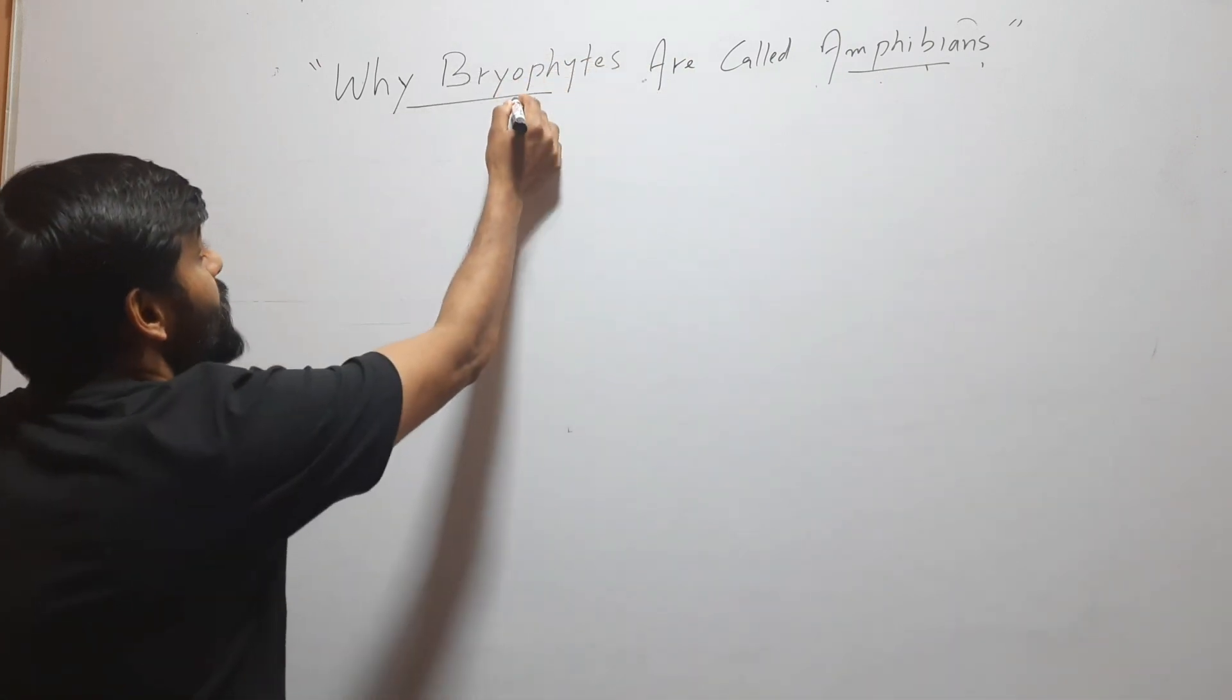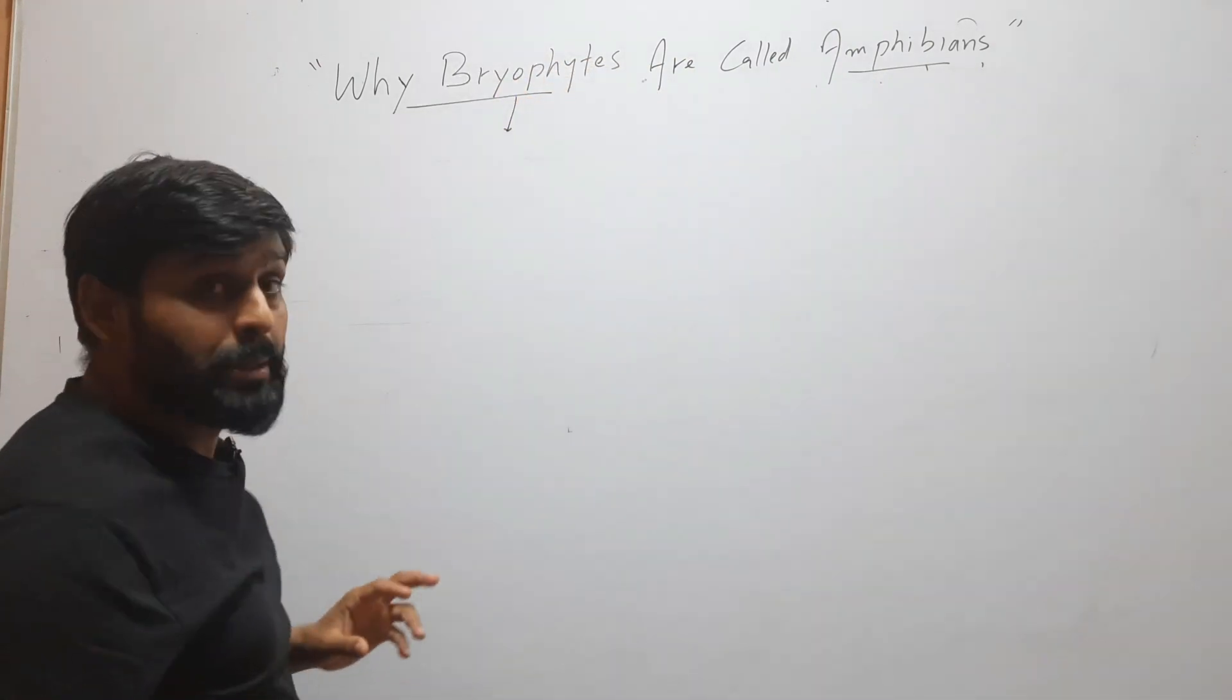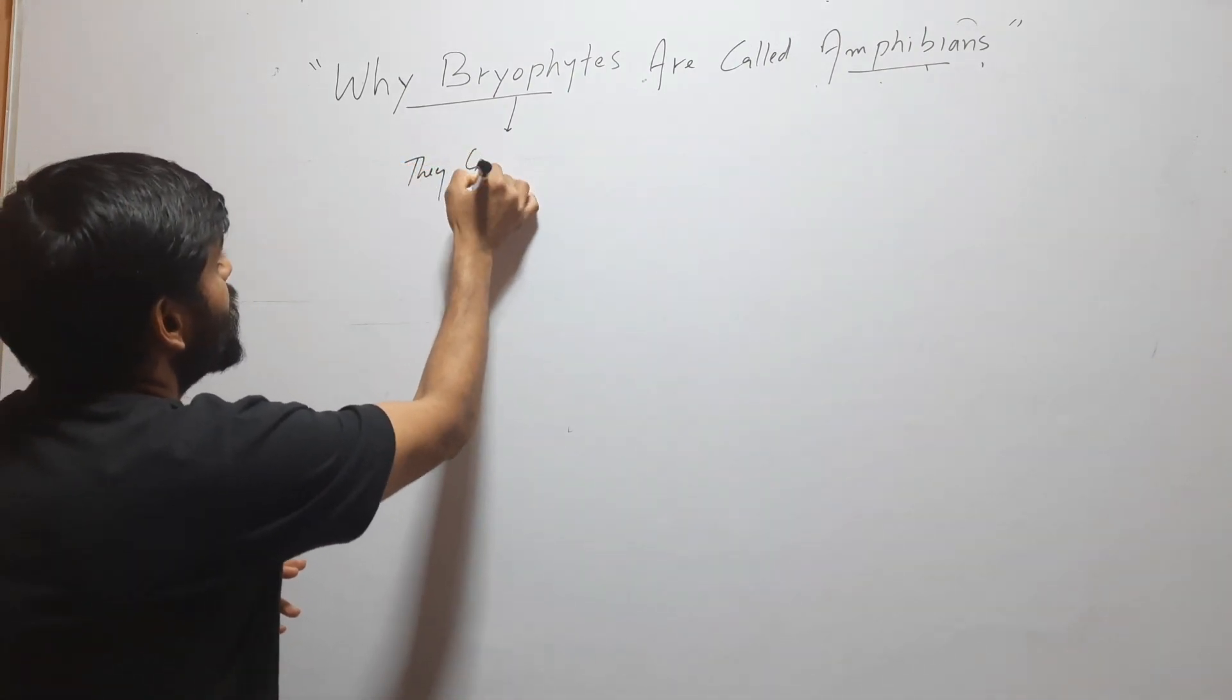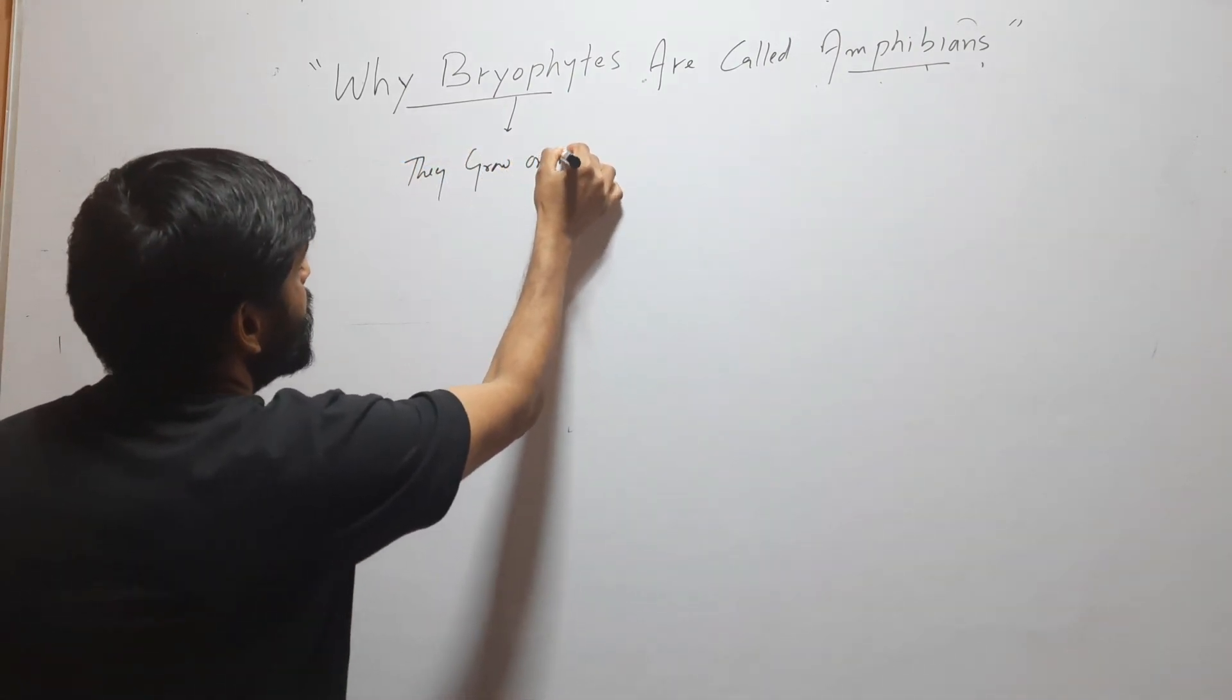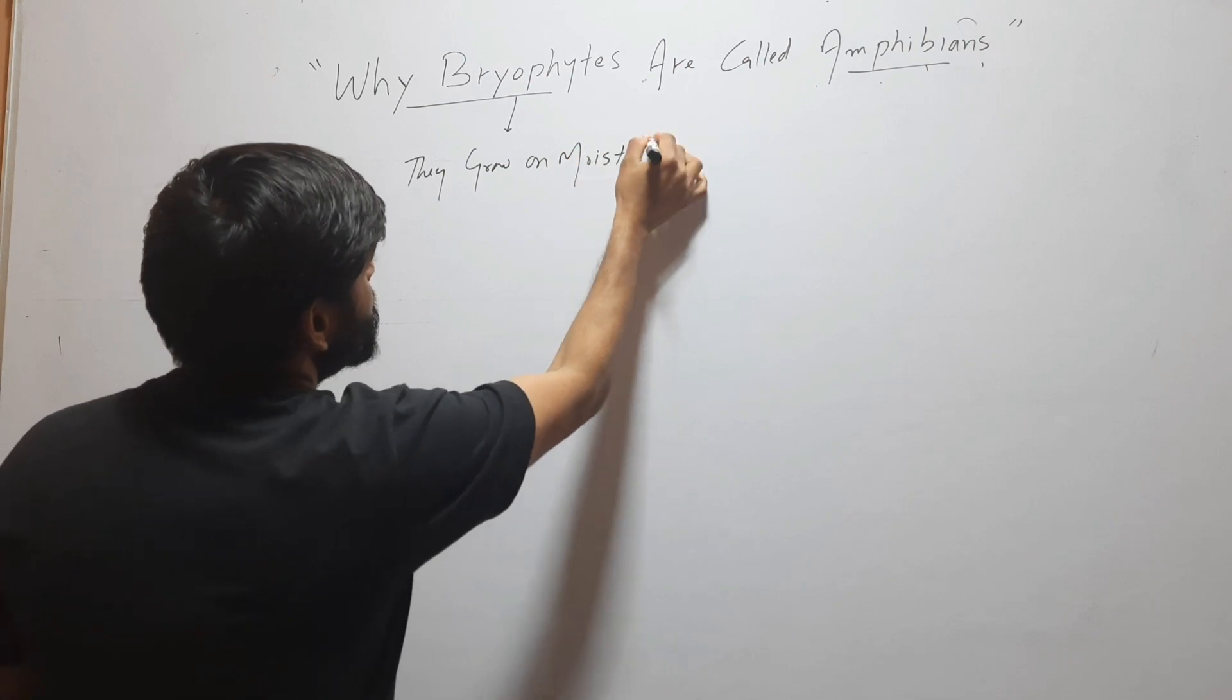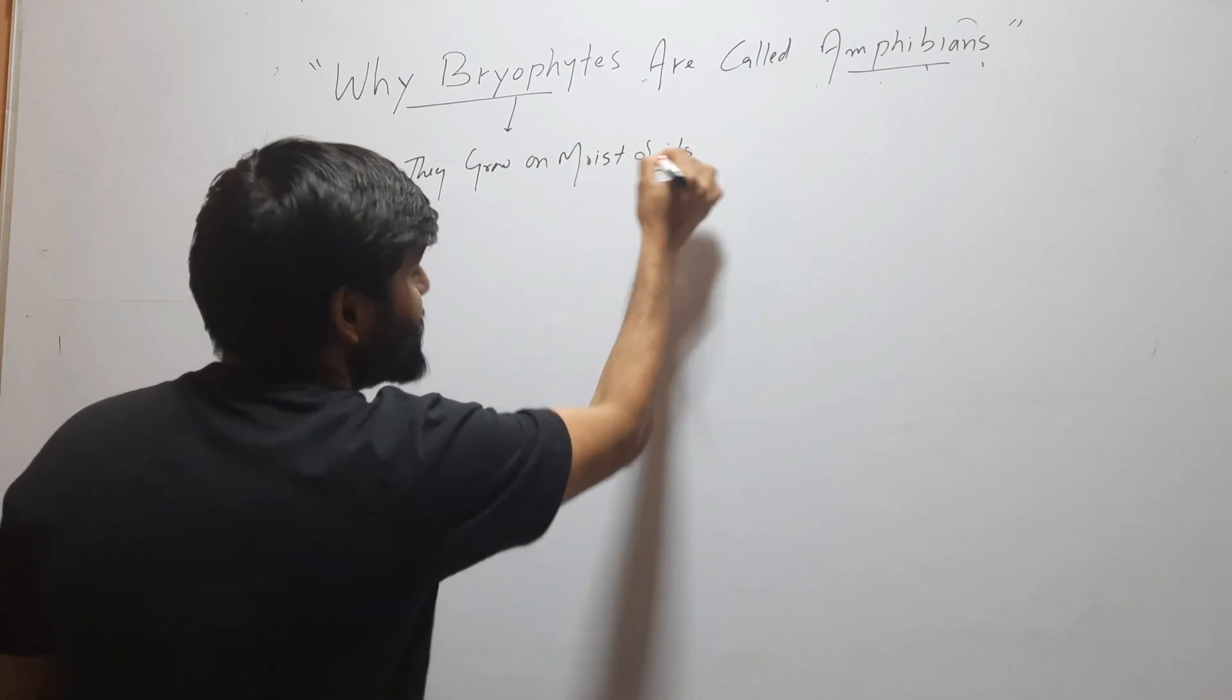So why bryophytes are called amphibian? Bryophytes are called amphibian because they grow on moist soils. Why they grow in moist soil?